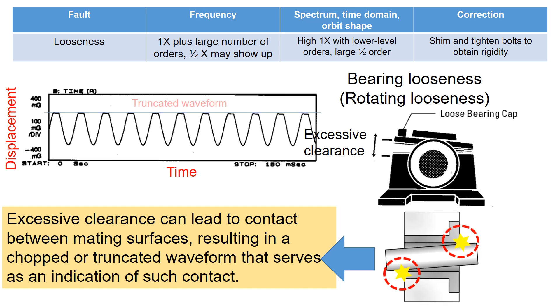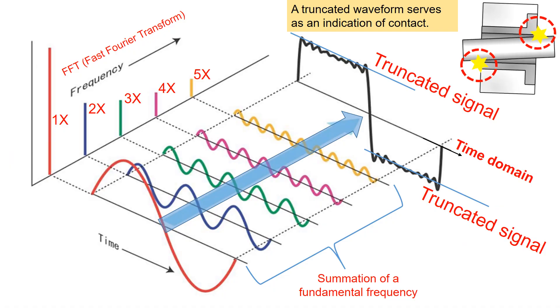Excessive clearance can lead to contact between mating surfaces, resulting in a chopped or truncated waveform that serves as an indication of such contact. For example, the truncated signals in the time domain indicate the contact.